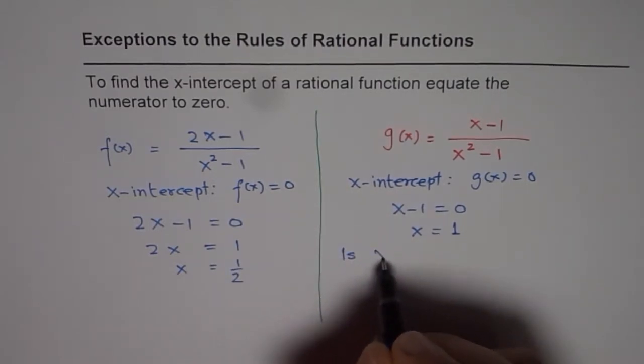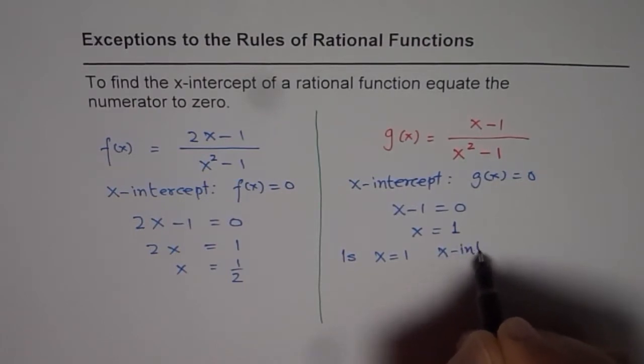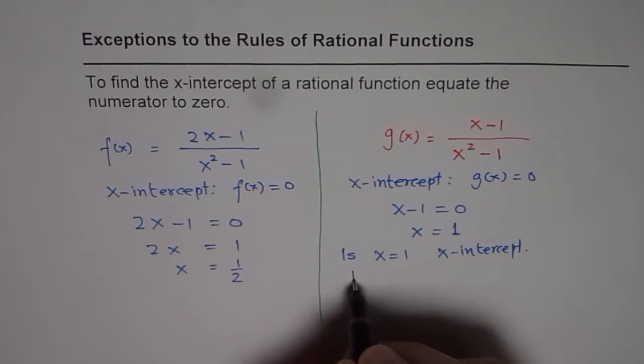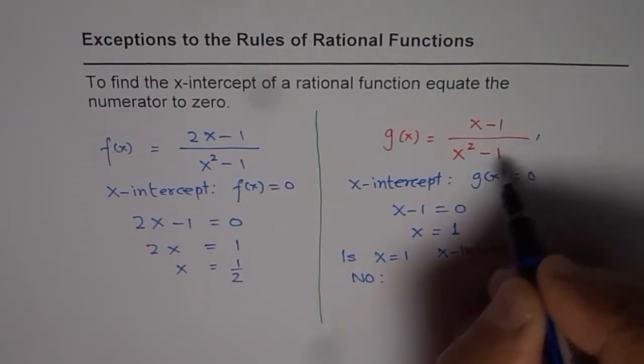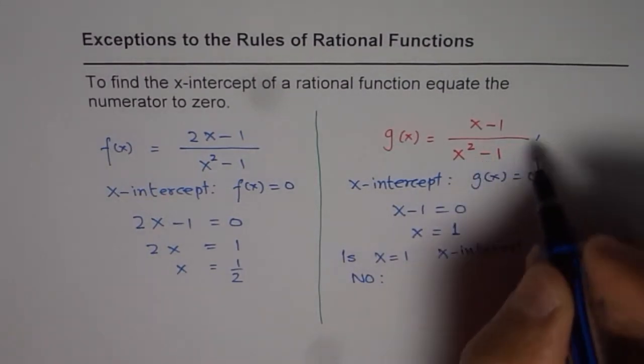The question is, is x equals 1 the x-intercept? The answer is no, because x equals 1 is a restriction. Here in the denominator, we have x squared minus 1.